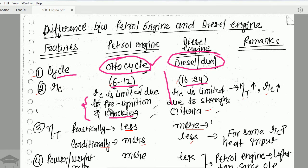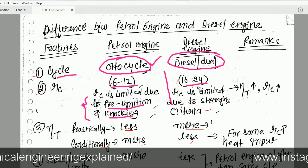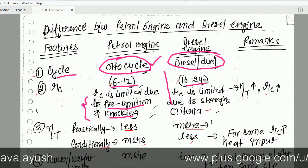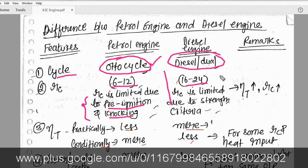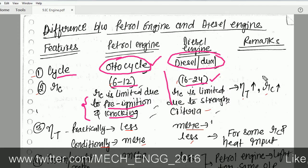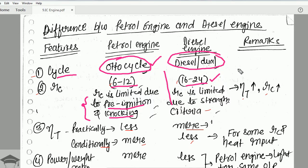If a higher compression ratio is used in a petrol engine, the inlet temperature and inlet pressure increase, raising the tendency for knocking and pre-ignition. In a diesel engine, the higher compression ratio increases pressure so much that it applies stress on the cylinder walls and the cylinder can burst. So it is usually kept around 17 to 18, but not more than 24 under any circumstances.